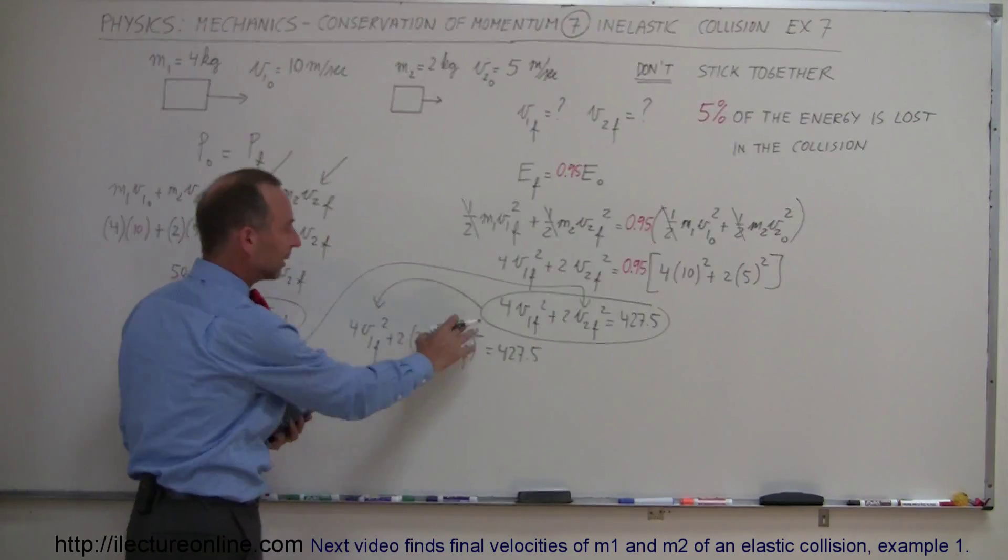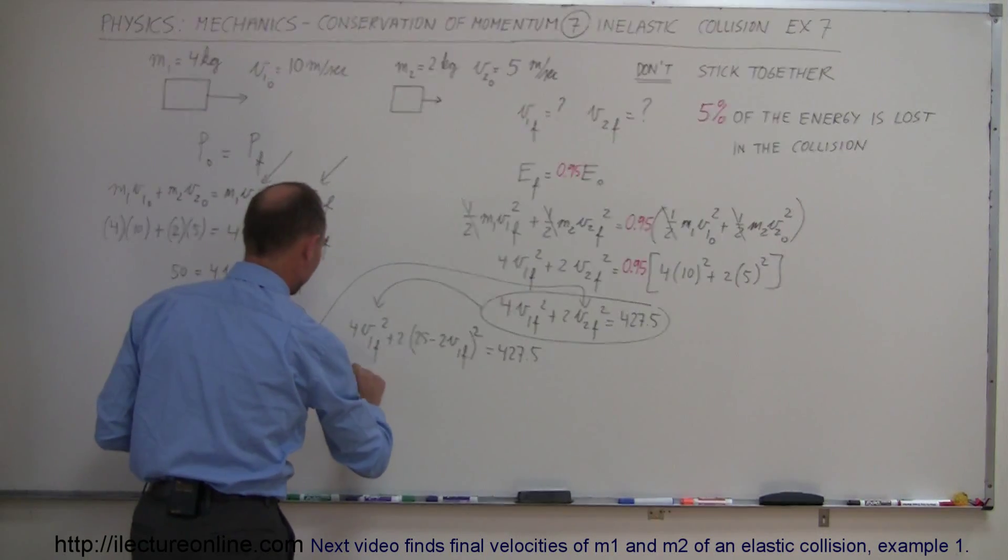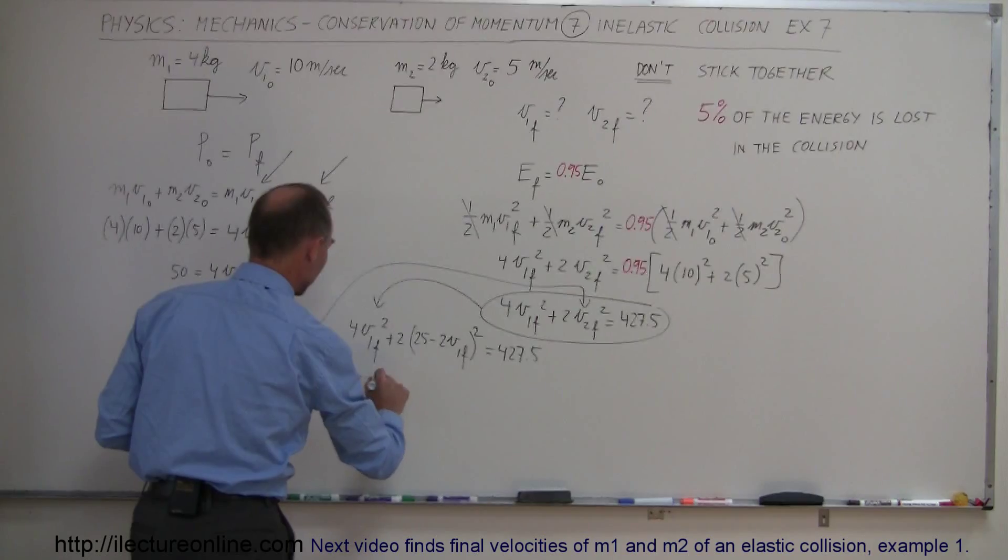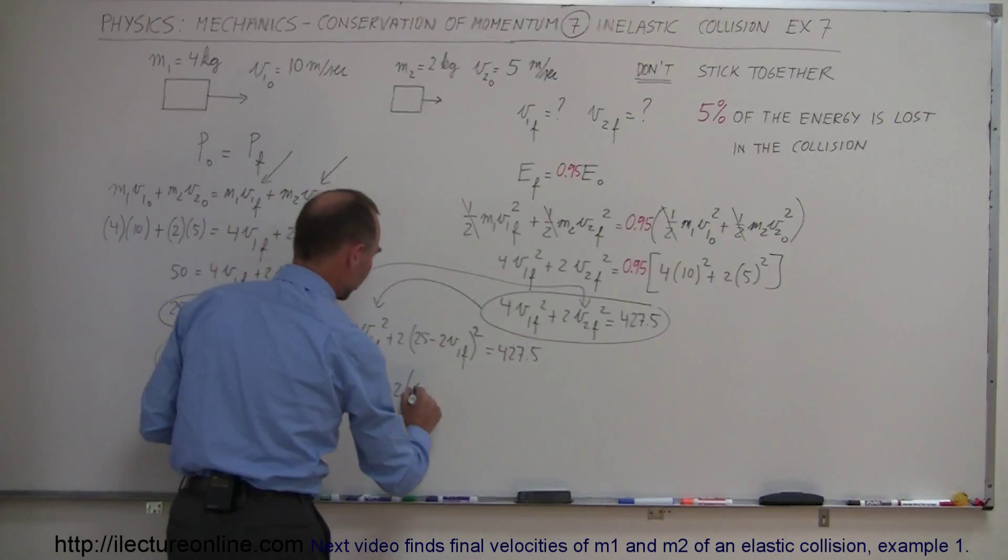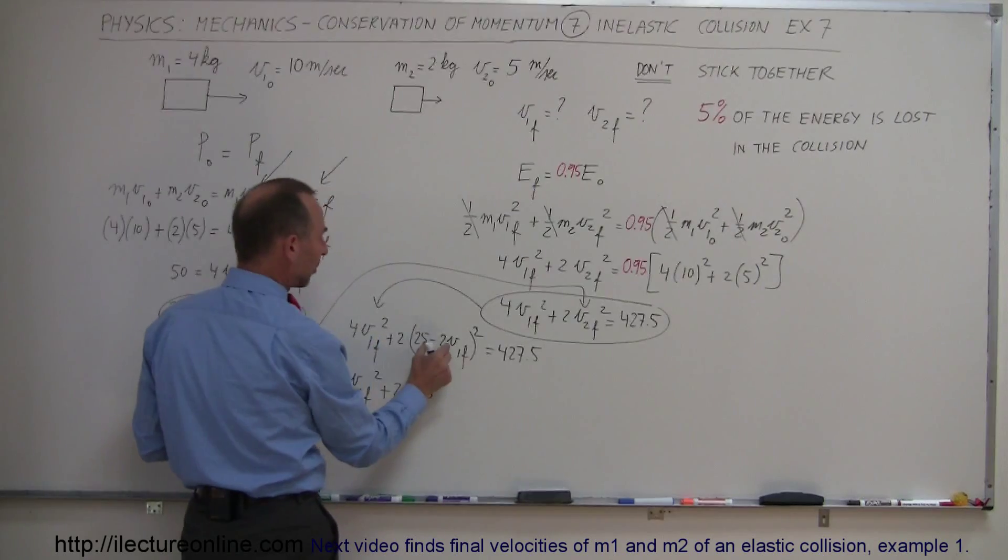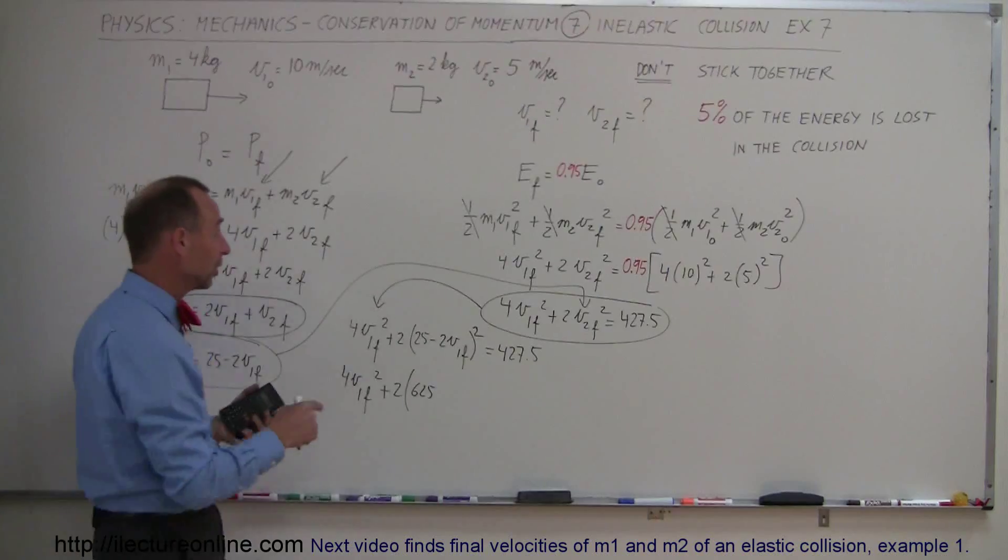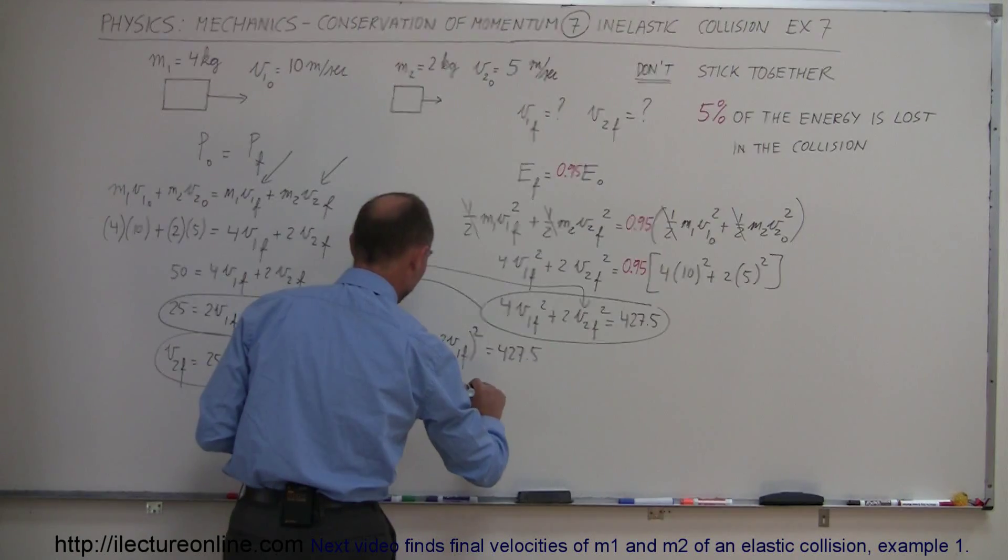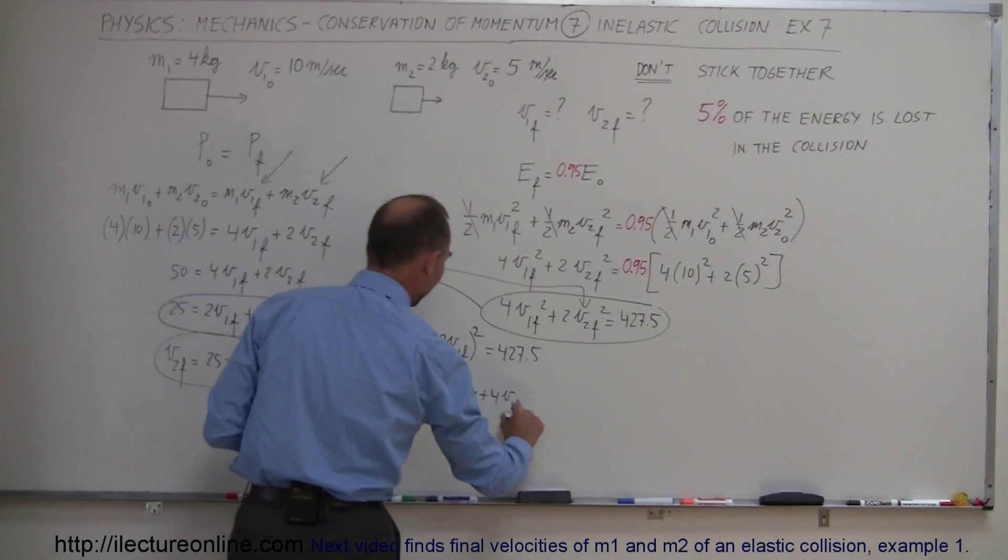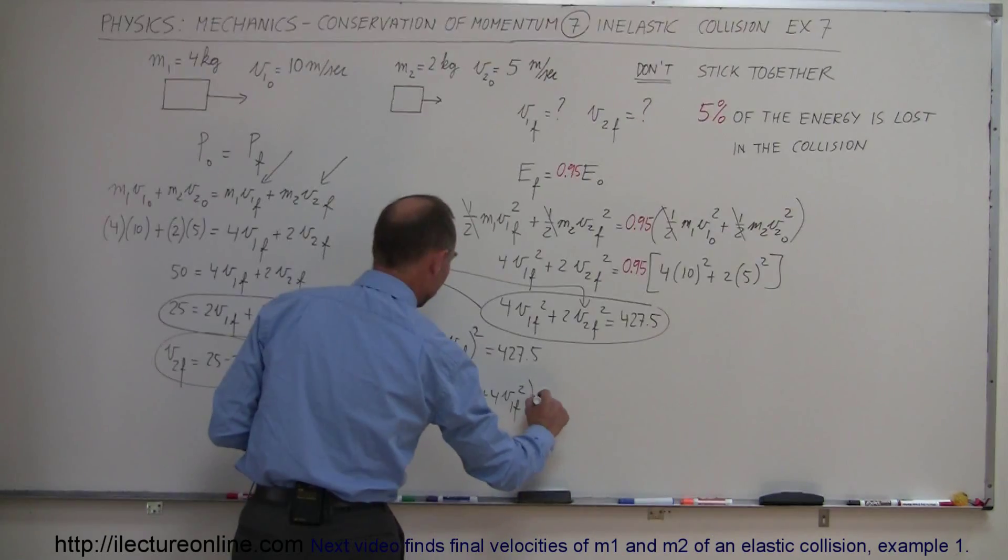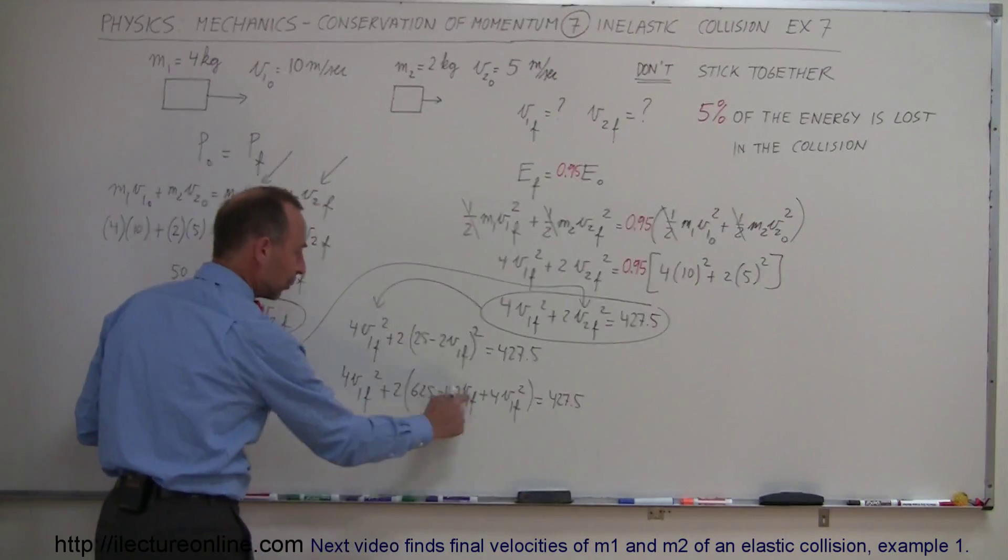Now here we have a binomial that we're squaring so we go ahead and work that out. So we have 4V1 final squared plus 2 times this number squared which is 625, twice the product of the two so the product of 25 and 2 is 50 times 2 is 100 with the negative sign so minus 100V1 final and then plus 4V1 final squared and that equals 427.5.